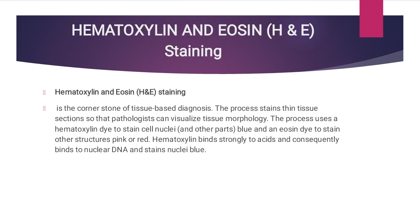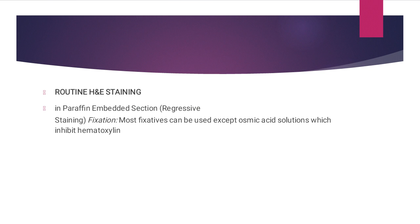Hematoxylin and eosin, or H&E staining, is the cornerstone of tissue-based diagnosis. This process of staining is used in thin tissue sections and helps the pathologist visualize the morphology of the tissue. The process uses a hematoxylin dye to stain the cell nuclei and other parts of the cells blue, and eosin dye to stain other structures pink or red. Hematoxylin binds strongly to acidic components and consequently binds to nuclear DNA, staining the nucleus blue.